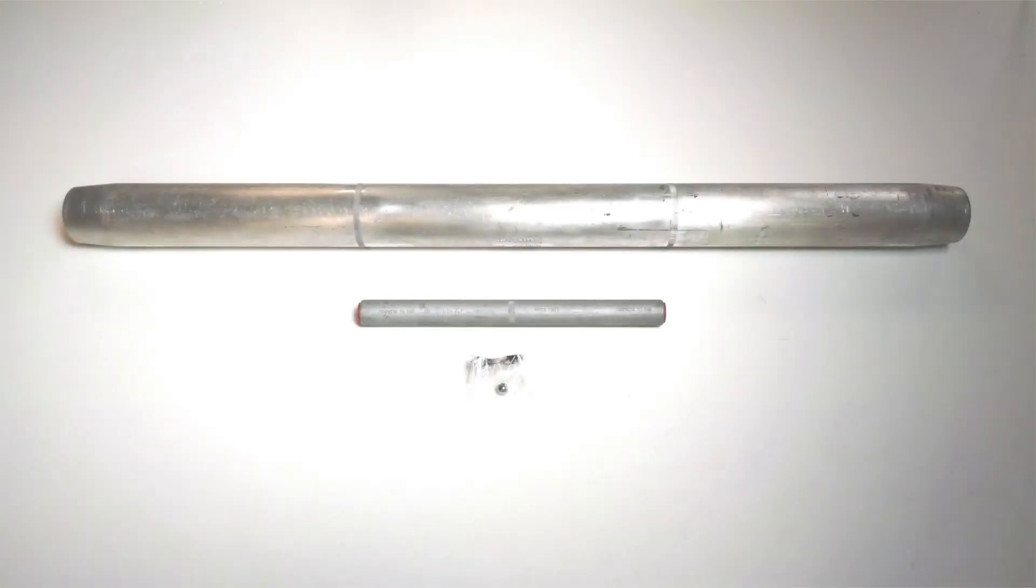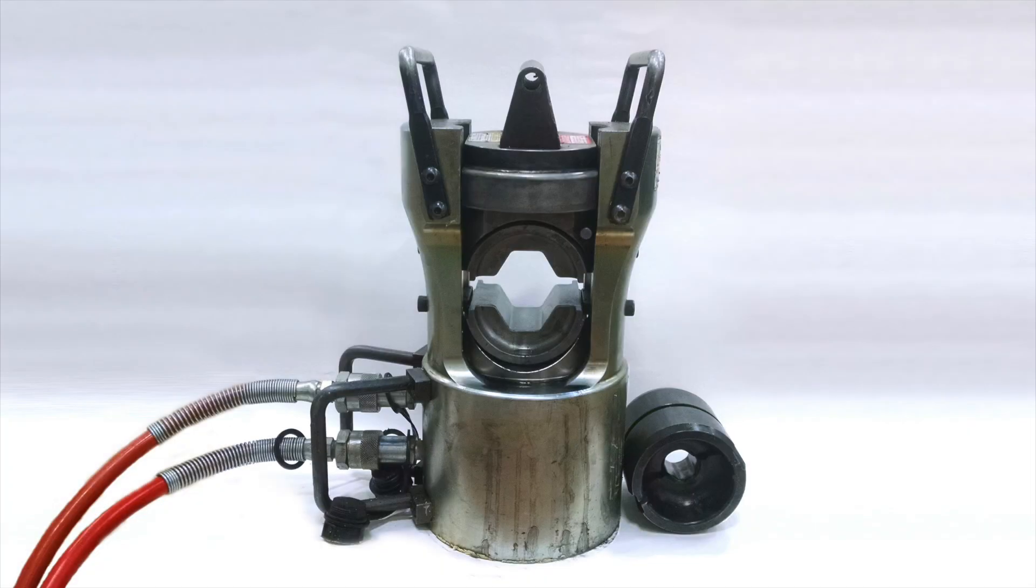The compression splice includes an aluminum alloy splice body, a galvanized steel core splice tube, and a steel ball for plugging the filler port. Required tools include compression press with the appropriate size dies.